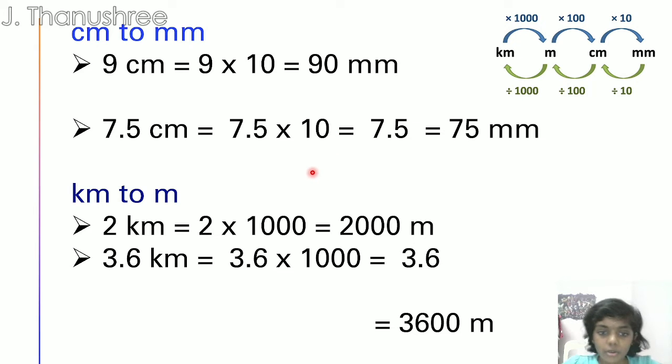Now we are going to answer these questions. First, we are going to do cm to mm. 9cm equals to 9 times 10. We are multiplying 9 by 10 because cm to mm we need to times 10. So 9 times 10 equals to 90mm.